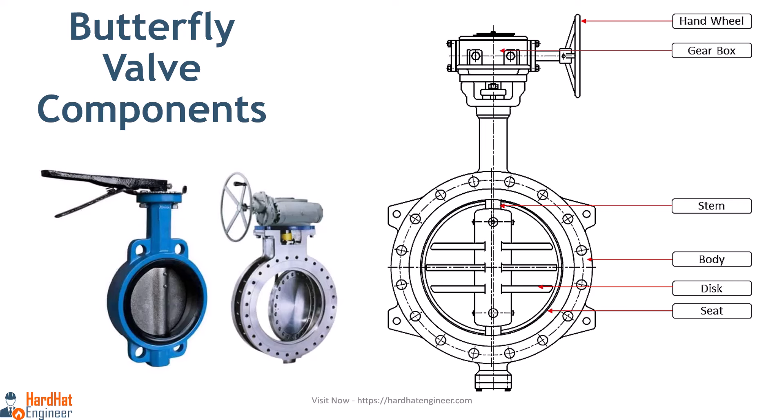Here you can see the cross section of the valve. The typical butterfly valve has a short circular body, a round disc, a shaft, and metal or soft seats. You can see the parts in the image — because of this shape it is known as a butterfly valve.